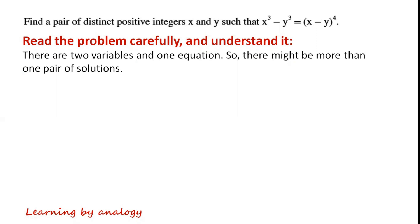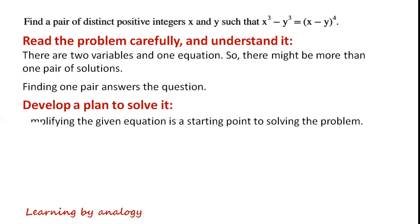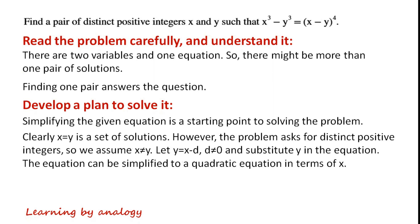There are two variables and one equation, so there might be more than one pair of solutions. Finding one pair answers the question. Simplifying the given equation is a starting point. Clearly, x equals y is a set of solutions. However, the problem asks for distinct positive integers, so we assume x does not equal y.